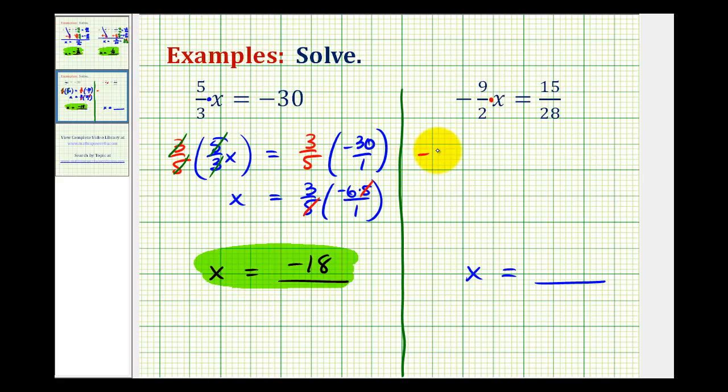So we'll have negative two-ninths times negative nine-halves x must equal negative two-ninths times 15 twenty-eighths. Focusing on the left side, notice how the two simplify out as well as the nines, and a negative times a negative is a positive, so we're left with x on the left. On the right, this is going to simplify. Let's write everything out in prime-factored form.